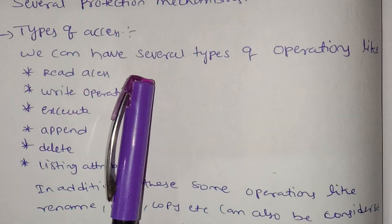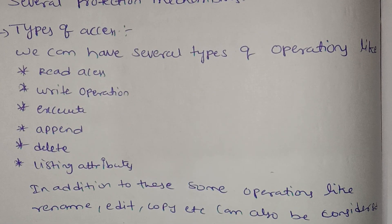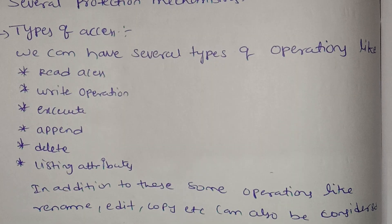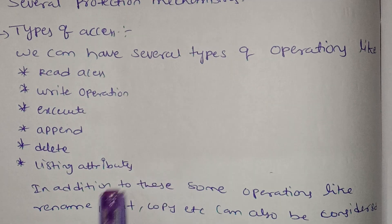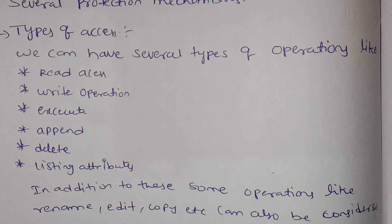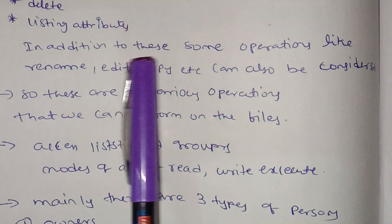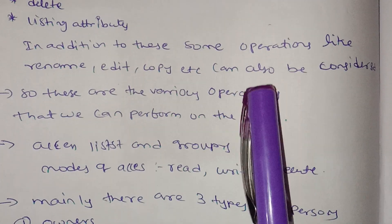We can have several types of operations. We use a lot of operations in file management. We use read, write, execute, append, delete, listing, and attributes. In addition to these, some operations like rename, edit, and copy can also be considered.